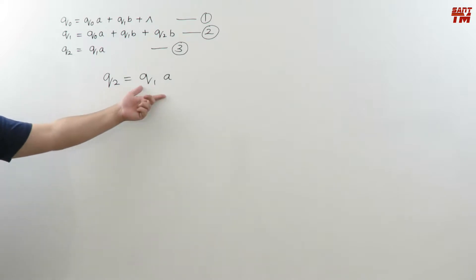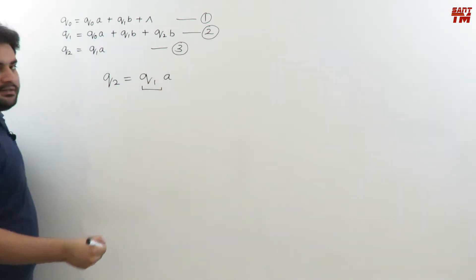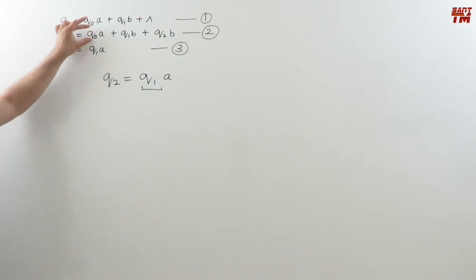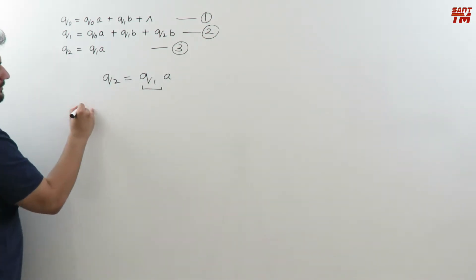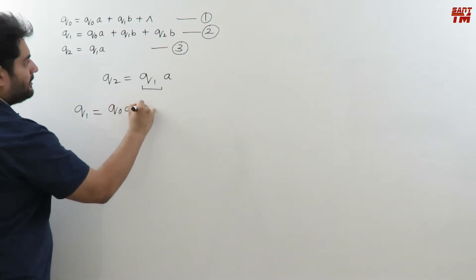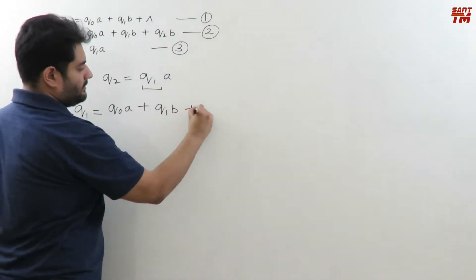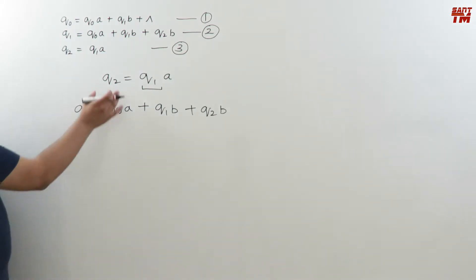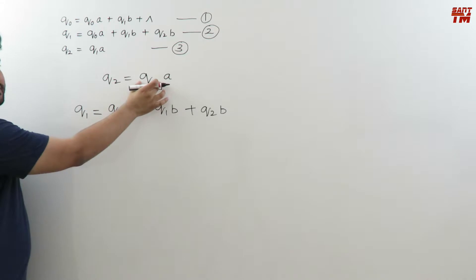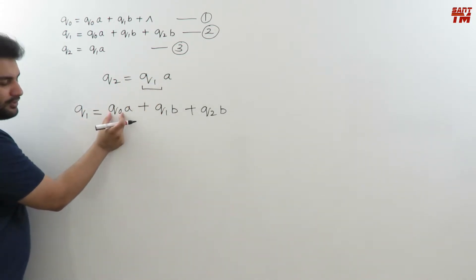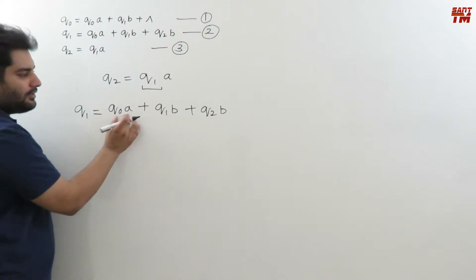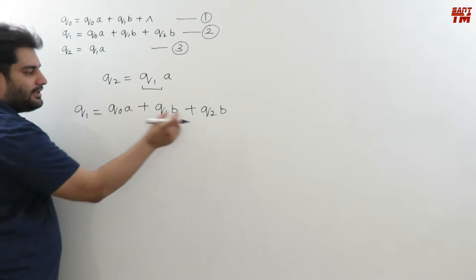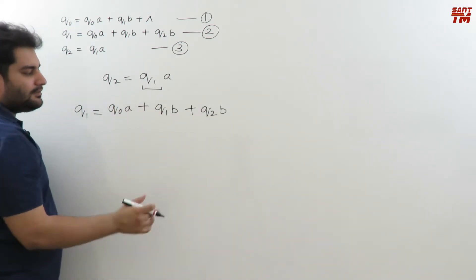To solve q2 = q1·a, we need the value of q1, so we must solve the q1 equation first and substitute it in. Let's solve the q1 equation: q1 = q0·a + q1·b + q2·b. To solve this, we need q0 and q2. However, we can substitute q2 = q1·a from equation 3, since q1 can appear in its own equation.